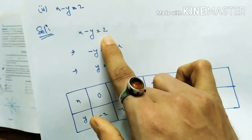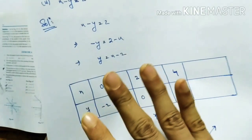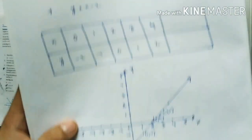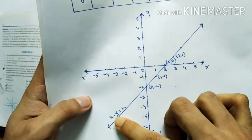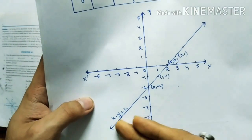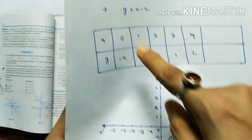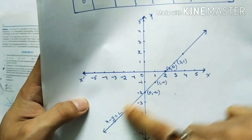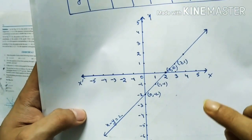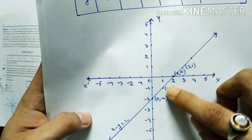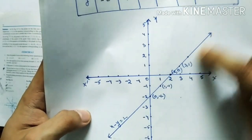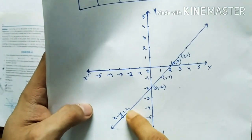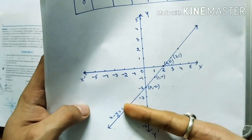The equation x minus y equals 2, or equivalently y equals x minus 2, gives a straight line. This straight line represents the equation x minus y equals 2. Locate these points and draw a line passing through them. Any point on this line — if you find its coordinates — will be a solution of this equation.